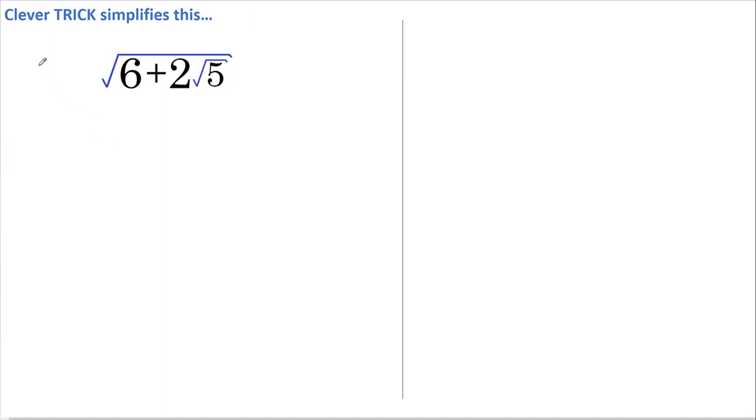Okay, the first thing I'm going to do is set this equal to y. I'm then going to square both sides and that gets rid of the square root sign. So we just have 6 plus 2 root 5.